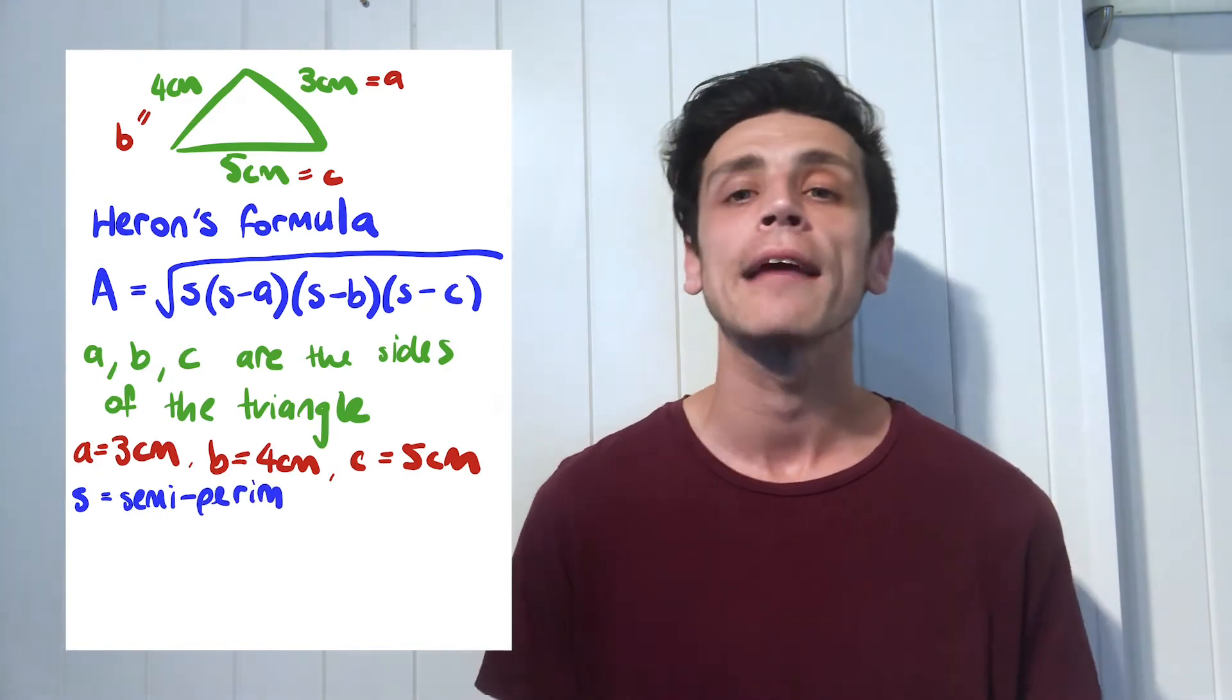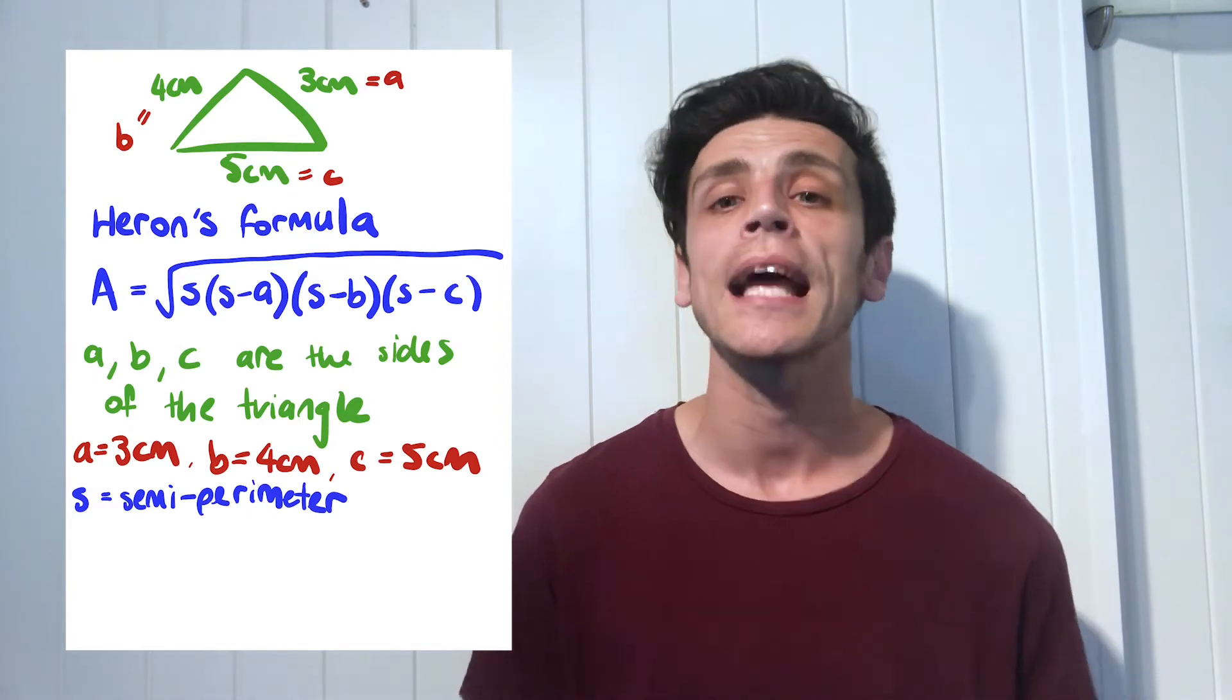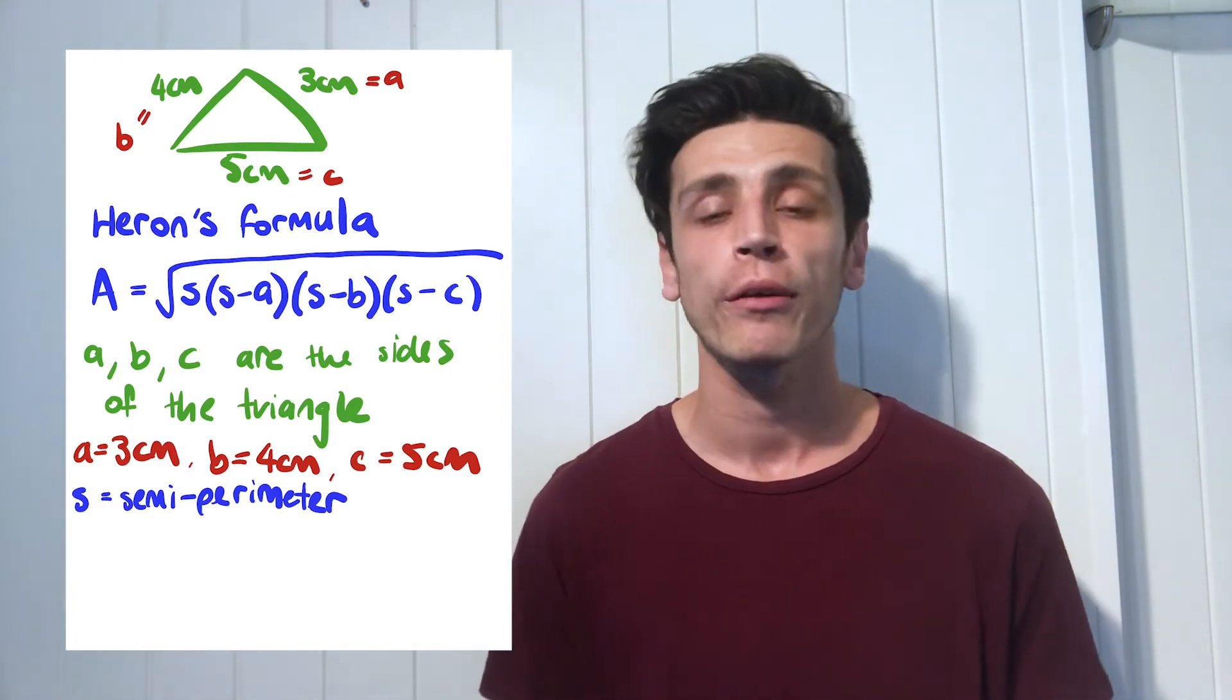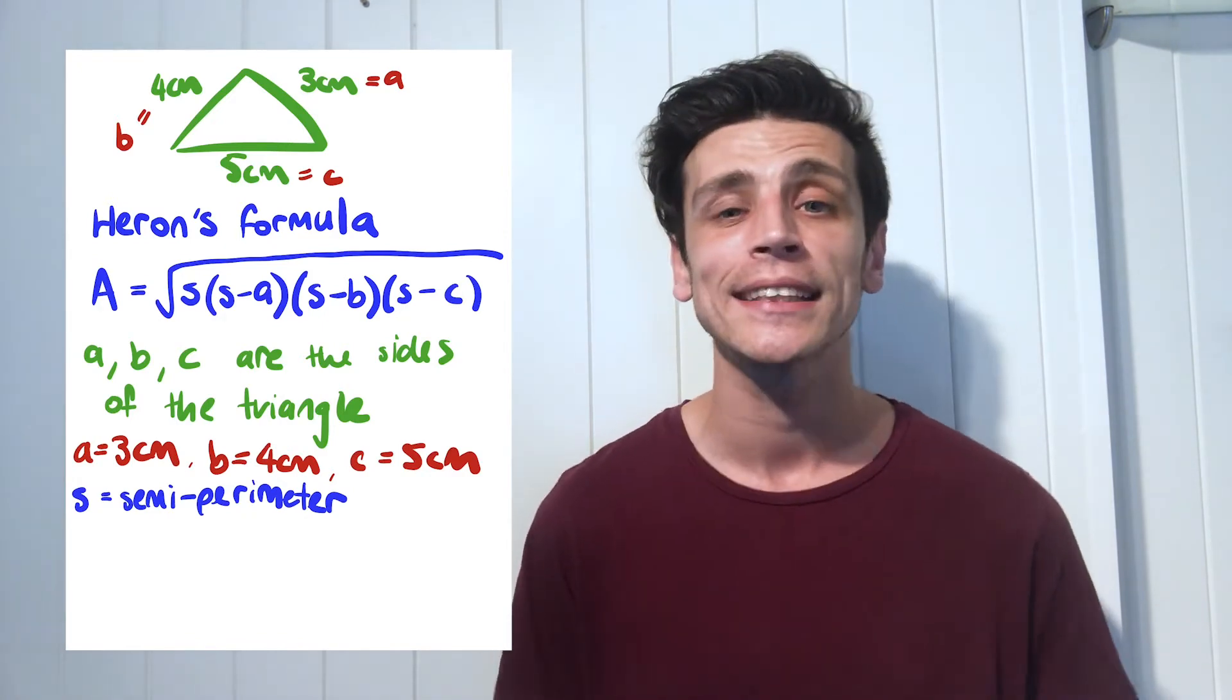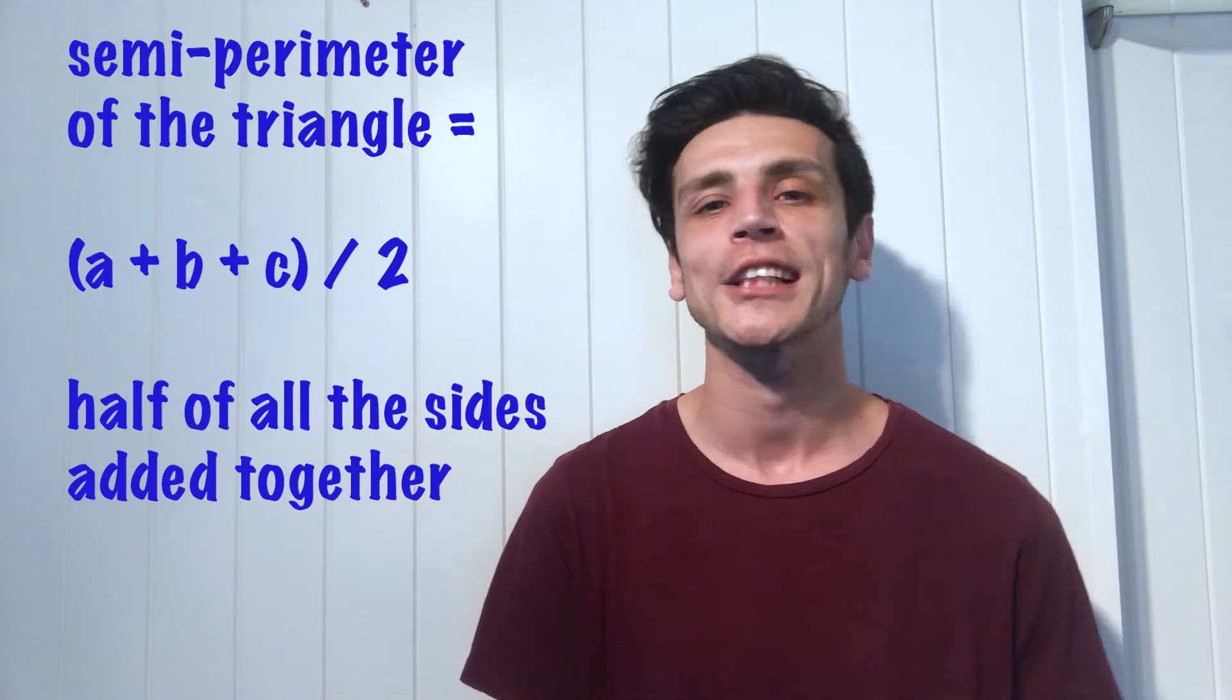Now perimeter just means the length all the way around. So the semi perimeter just means half of that. So all we do is we take our sides, our three, our four and our five in this case, and we just divide it by two because we only want half of it. So let's work that out shall we?